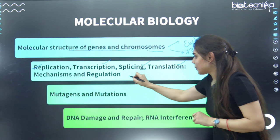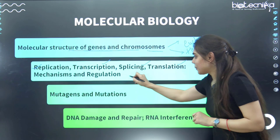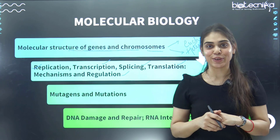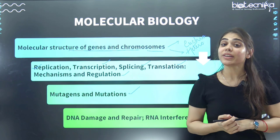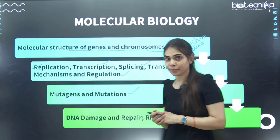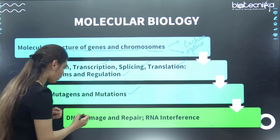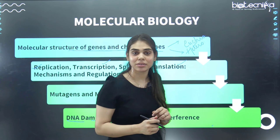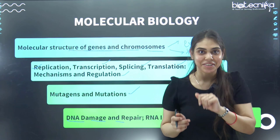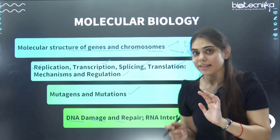Next, you need to study what causes mutations and what those mutation processes are. What are the types of mutation? What is the mutation involved in sickle cell anemia? The last topic is DNA damage and repair — how DNA is damaged and what repair mechanisms we have — as well as RNA interference.